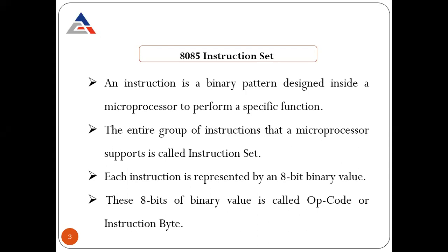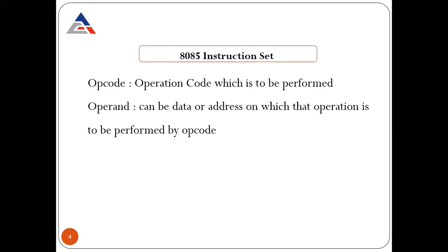Each instruction is represented by an 8-bit binary value. These 8 bits of binary value are called op code, which stands for operation code or instruction code. The operation code specifies the operation to be performed — for example, add, subtract, or multiply. These are your op codes.